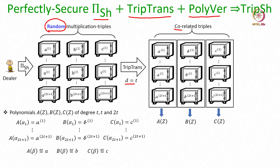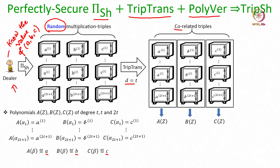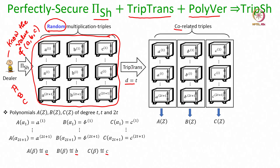Now let us define another point on these A, B and C polynomials: the A polynomial evaluated at beta we define to be A, the B polynomial evaluated at beta we call B, and the C polynomial evaluated at beta we call C. Notice that the dealer will know the value of this triplet (A, B, C), because it knows the polynomials A, B and C — these polynomials are computed deterministically as a function of all the triplets shared by the dealer during the triple transformation protocol. Since all the triplets are known to the dealer and it knows the steps of the triple transformation, the dealer is aware of this triplet (A, B, C).